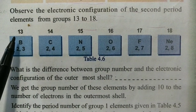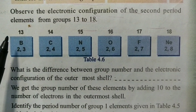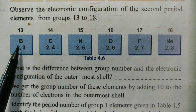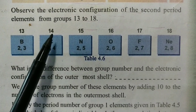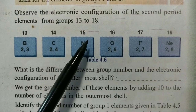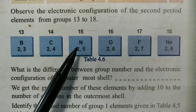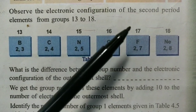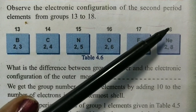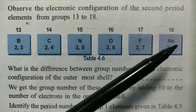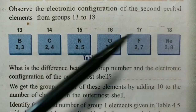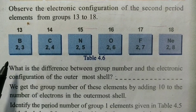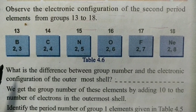Group 13 is Boron, group 14 is Carbon, group 15 is Nitrogen, group 16 is Oxygen, group 17 is Fluorine, group 18 is Neon. These are the group elements and their electronic configuration.